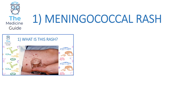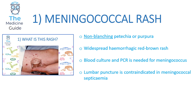Rash 1 is an example of a meningococcal rash, which is very important because it is a life-threatening condition. The key feature to recognise is that a meningococcal rash is a non-blanching rash. In the picture, a doctor presses a piece of glass against the child's rash and the rash persists — confirming it is non-blanching. This could be a non-blanching petechial or purpuric rash. Purpura is a more flat, widespread rash. Blood cultures and PCR are needed; lumbar puncture is contraindicated in meningococcal septicaemia.